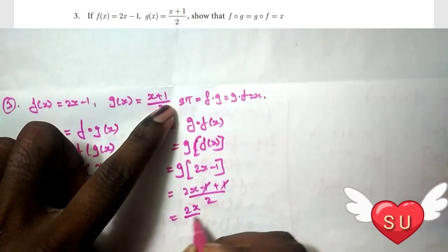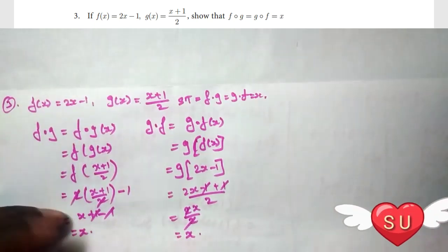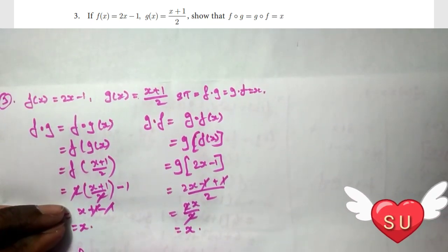The -1 and +1 cancel, giving 2x/2. The 2s cancel, so the answer is x. Therefore, f∘g = g∘f = x.